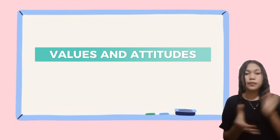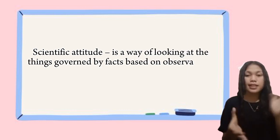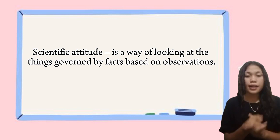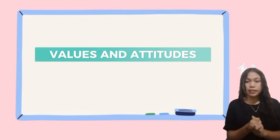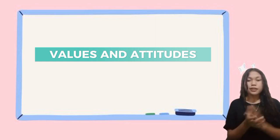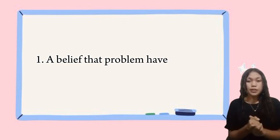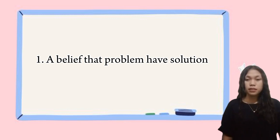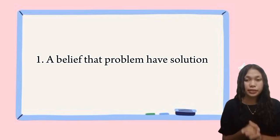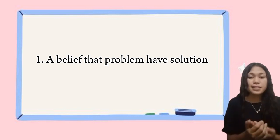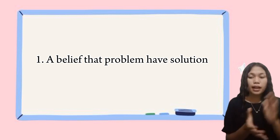Our next topic is all about values and attitudes. A scientific attitude is a way of thinking that is based on facts and observation. This means being curious, open-minded, and willing to learn from evidence. Here are some examples of attitudes that are important for scientists to possess. The first is believing that problems have solutions — scientists believe that problems can be solved through careful observation, experimentation, and reasoning. For example, a scientist studying a disease might believe that a cure can be found through research and experimentation.